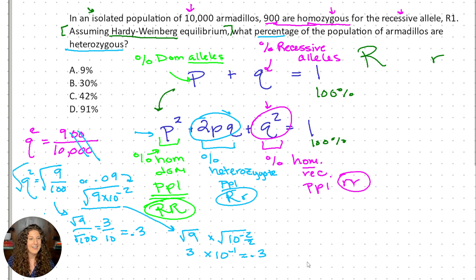All right, so now we have q is equal to 0.3. So now we can plug 0.3 into our equation. p plus 0.3 equals 1. 1 minus 0.3 is going to give us p equals 0.7. Okay, we're almost there.